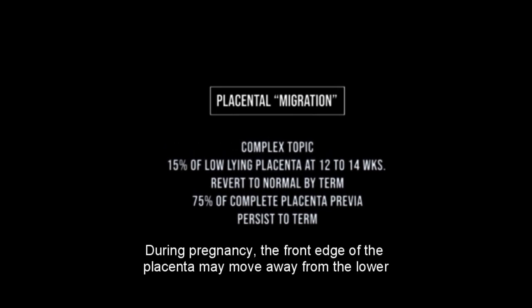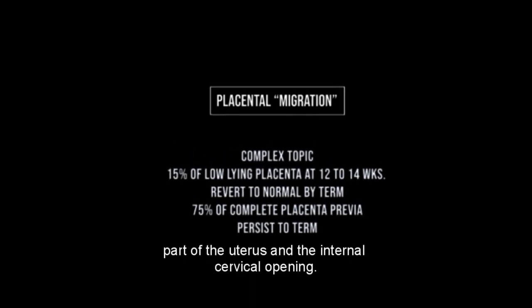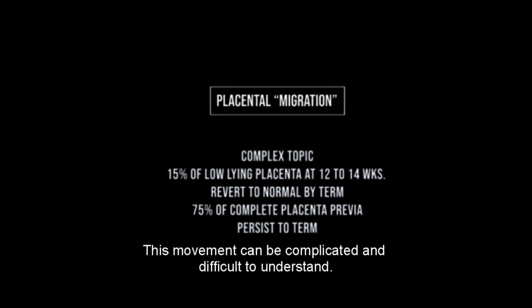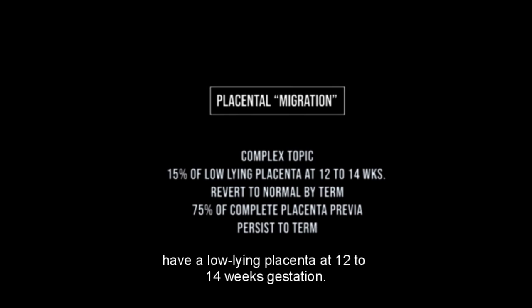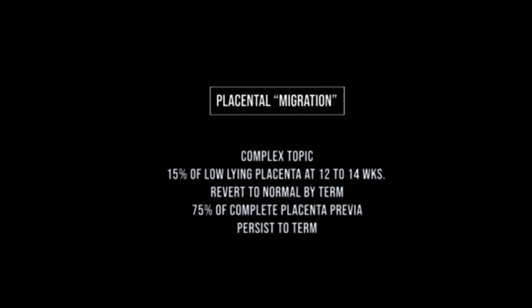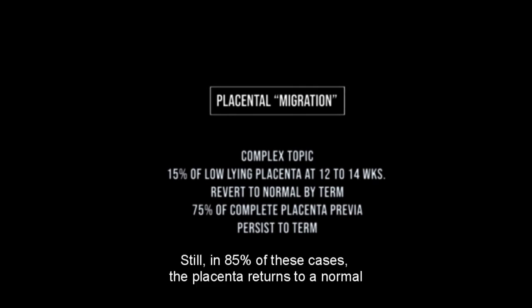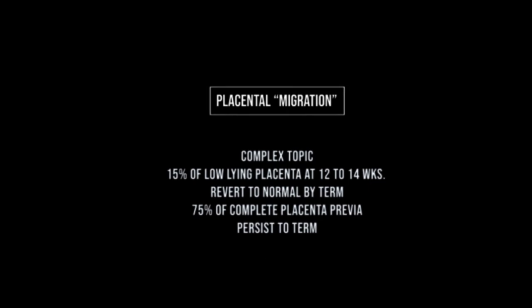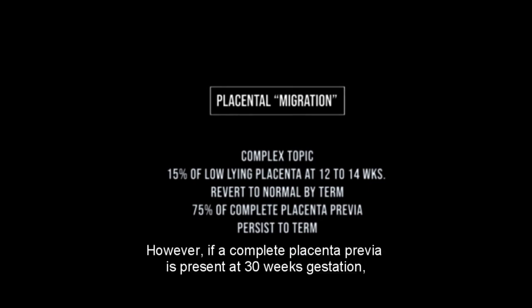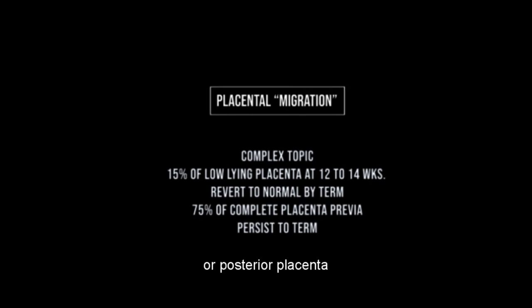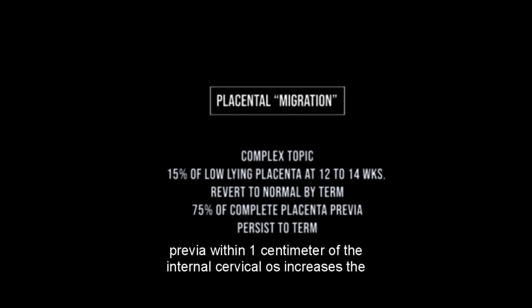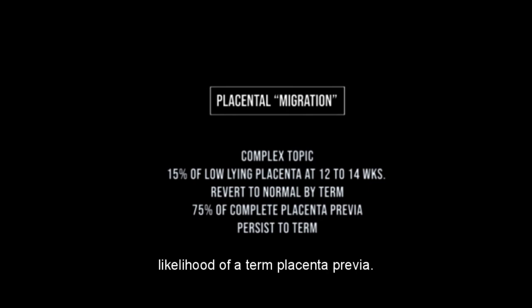During pregnancy, the front edge of the placenta may move away from the lower part of the uterus and the internal cervical opening. Studies using ultrasound have revealed that about 15% of women have a low-lying placenta at 12 to 14 weeks gestation, but in 85% of these cases the placenta returns to a normal position by term. However, if a complete placenta previa is present at 30 weeks gestation, there is a 75% chance that it will persist until delivery. A complete placenta previa or posterior placenta previa within 1 cm of the internal cervical os increases the likelihood of a term placenta previa.